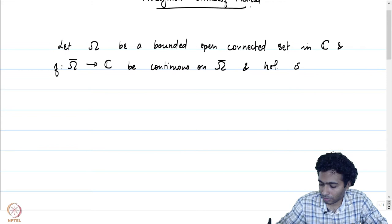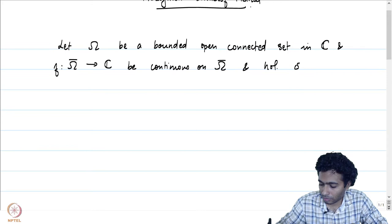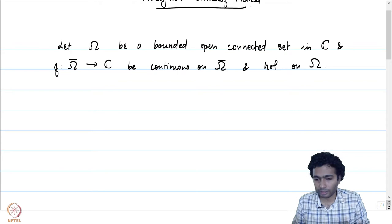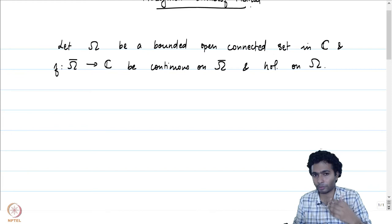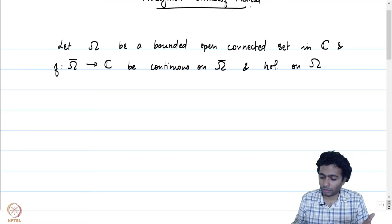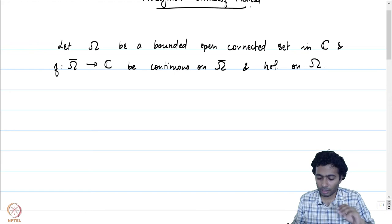F is a function holomorphic on omega, but we have slightly more extra conditions on F. F is also defined on omega-bar and is continuous there. Holomorphicity on omega certainly implies continuity on omega, but we did not know anything about how F behaves on the boundary of omega. We are demanding that F extends continuously up to the boundary — that is the condition we have put forward.